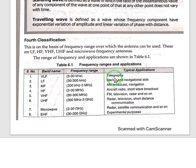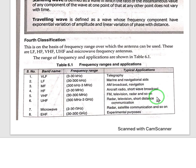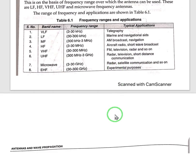Very low frequency is used for telegraphy. Low frequency is used for marine and navigational aids. Medium frequency is used for broadcast from radio and navigation. High frequency is used for aircraft radio and shortwave broadcast. Very high frequency is used for television, radars, and FM stations. Ultra high frequency is used for radar and television. Microwave is used for radars, satellite communication, and short distance communication. Extremely high frequency is used for experimental purposes.